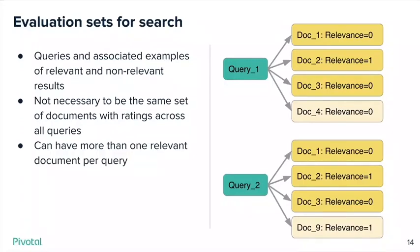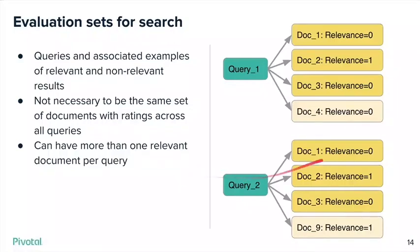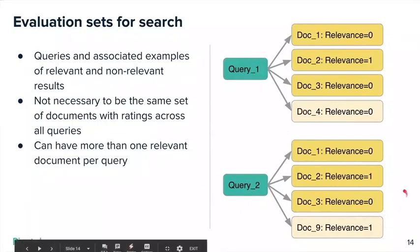The first step is you need to have some sort of evaluation set. What we need for that are individual queries, and with each of those queries, associated ratings or rankings for relevance, and associated examples determining whether something is relevant or not. It doesn't necessarily have to be that the same set of documents have ratings across all queries. For example, document four might only be in query one, and document nine only in query two. The important thing is that there be ratings associated with each query and certain documents, and more than one thing could be relevant.